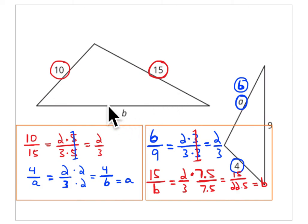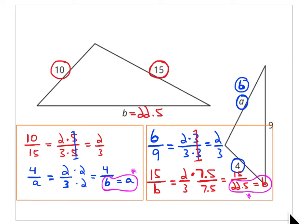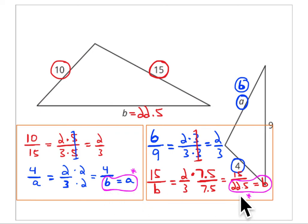You can go through these ratios and test them. Use a calculator if you want and get a decimal value. Convince yourselves that all of the ratios of corresponding sides are equal. So 6 is equal to A and 22.5 is equal to B.